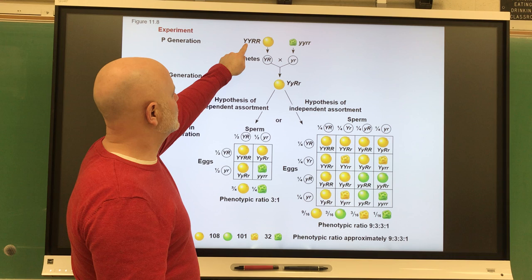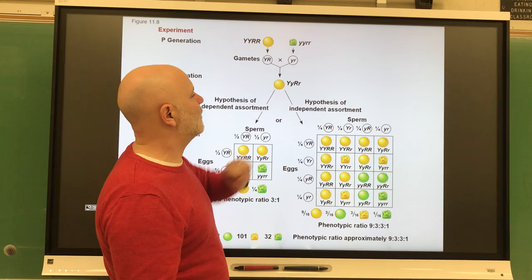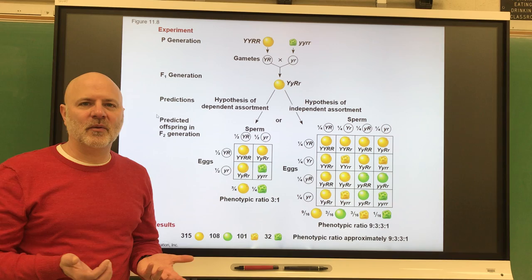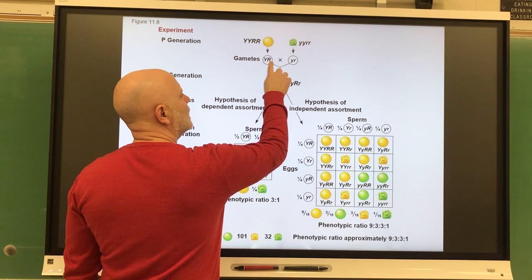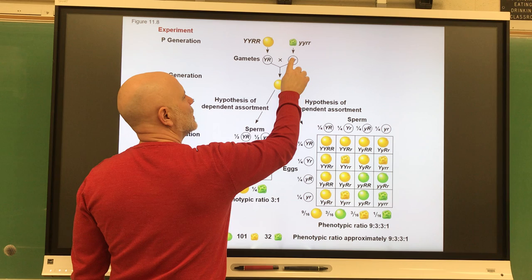So we're using Y for the dominant allele of yellow, little y for the recessive green, capital R for round, and little r for wrinkled. In his P generation, he always started off with 100% true breeders. When you look at the gametes, we have two letters now in the gametes because there are two traits. Capital Y for one trait, capital R for the second trait. Little y for one trait, green, little r for the wrinkled trait.